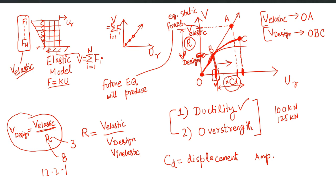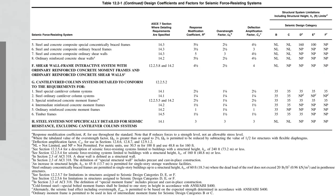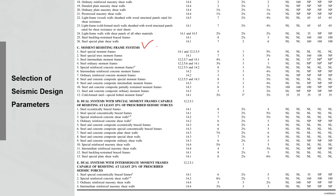The Cd factor is an amplification, so its value will be more than one — typically 2.5, 3, or 3.5 or even more. In UBC 97, this amplification was simply 0.7 times r, not a separate factor. But in IBC 2021 and the current IBC series, we have a separate Cd factor. For example, for a moment resisting frame with r equal to 8, Cd is 5.5 — so you reduce forces by 8, then amplify displacements by 5.5.